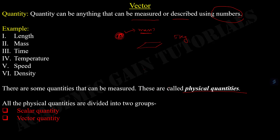All the physical quantities are divided into two groups: one is scalar quantity and another is vector quantity. We will discuss the scalar quantity and vector quantity in this chapter briefly.